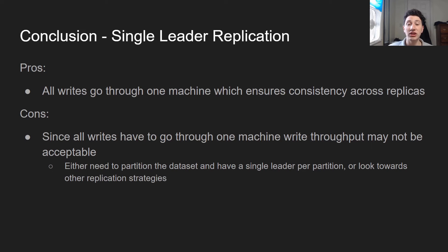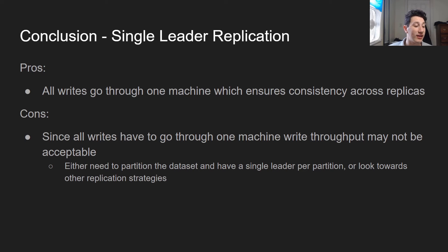Let's summarize single leader replication. The pro is that all writes go through one machine, which simplifies dealing with conflicts. If I had multiple leaders, I could write two different things about the same row and have to resolve that conflict — in single leader replication there's one single source of truth. The con is that since all writes have to go through one machine, write throughput is inevitably lower. Two ways to deal with that: partition the data set so each partition has a single leader, or use a different type of replication such as multi-leader or leaderless, which has its own trade-offs we'll discuss in subsequent videos.